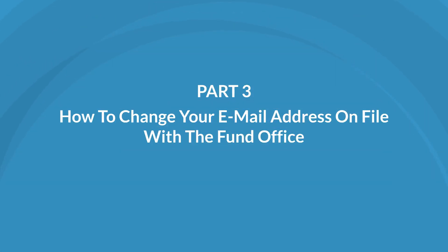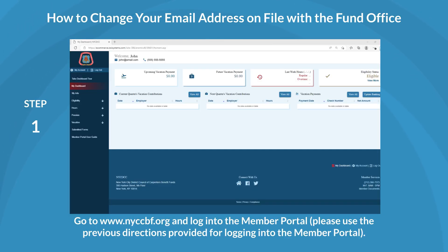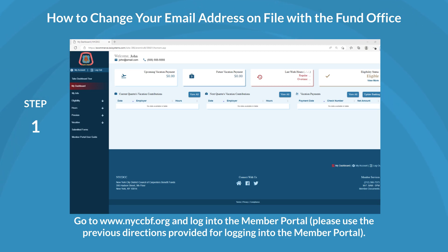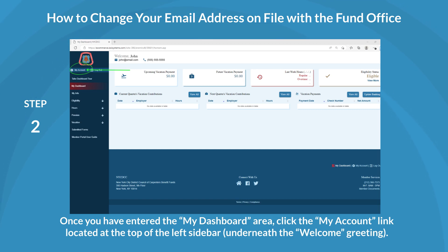Next, we'll learn how to change your email address on file with the Fund Office. First, go to www.nyccbf.org and log into the Member Portal. You can use the previous directions provided for logging into the Member Portal. Once you have entered the My Dashboard area, click the My Account link located at the top of the left sidebar underneath the Welcome Greeting.